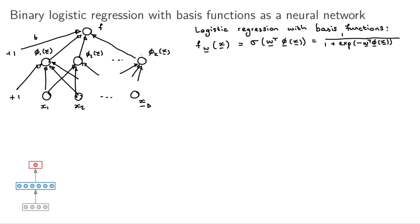This is starting to look like a neural network. Previously I defined phi_1 through phi_K by hand, but with neural networks these basis functions are learned. We define their structure but give them parameters updated as part of the model. Specifically, we can set the k-th basis function phi_k(x) to be the sigmoid of some weight vector w_k-transpose times x plus a bias b_k.